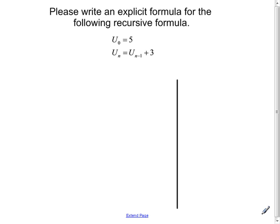And then it says u sub n equals u sub n minus 1 plus 3. That's a little harder to comprehend, but remember what we said: u sub n is any element of the recursive sequence, and u sub n minus 1 means just the one that is previous to that — or simply the previous one.